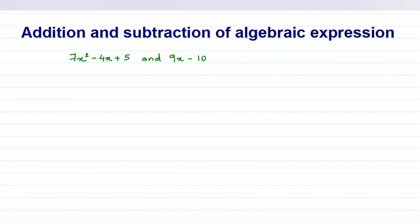You can do this in a column method or row method — whichever gives you the correct answer. I'm doing the column method here. First I'm going to write down the first expression: 7x² minus 4x plus 5. In the second expression, you have to place the like term just below it. For example, 9x — its like term is 4x — so I'm going to place 9x below 4x with a positive sign. Next I have minus 10, which is a constant, so it goes below the constant 5 with a minus sign.